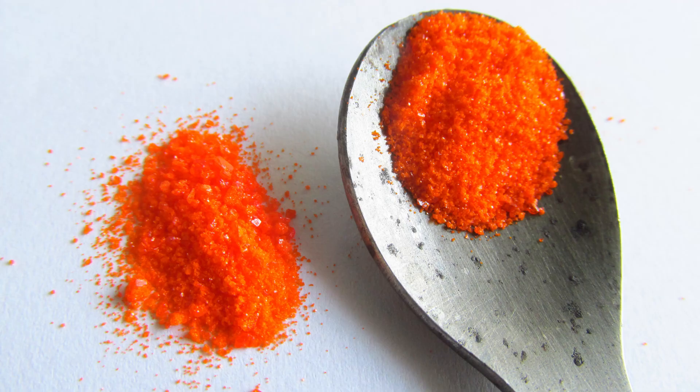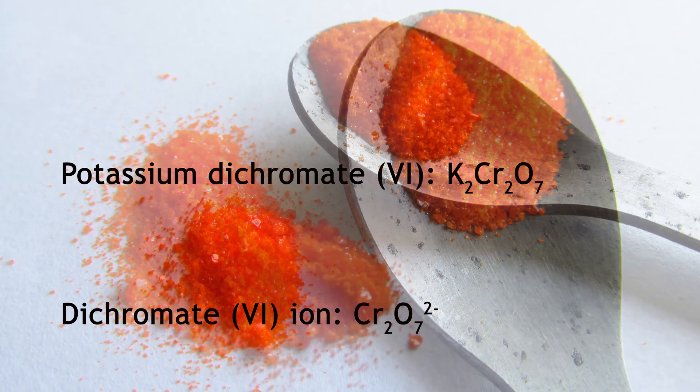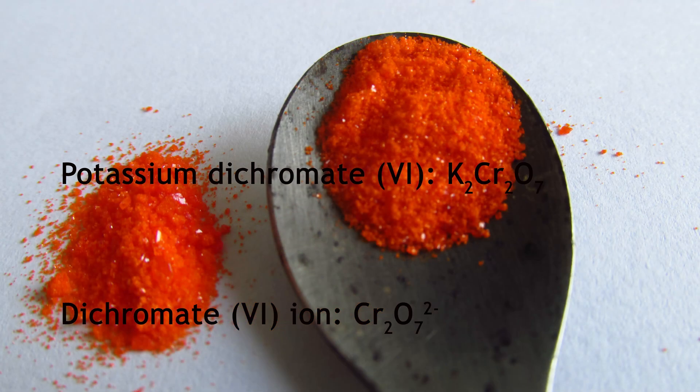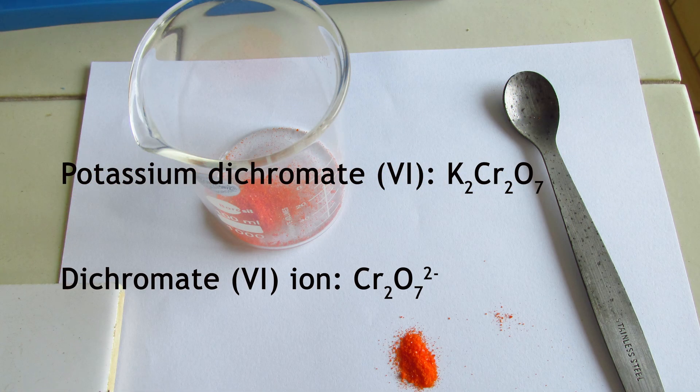First of all, let's look at potassium dichromate 6. Here is the formula, and here is how it looks. Orange crystals, not very hygroscopic. They wouldn't turn into an orange pool of liquid if you leave them alone.